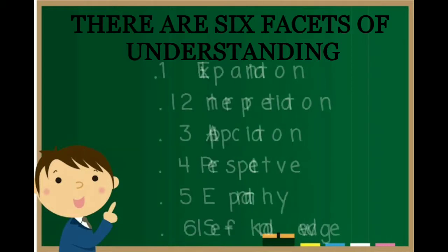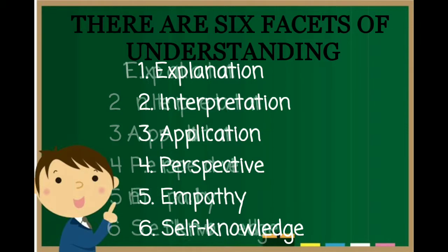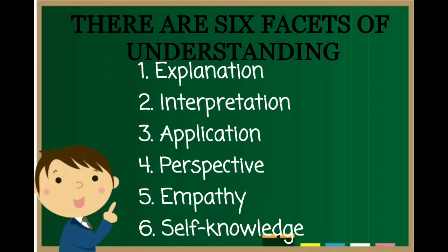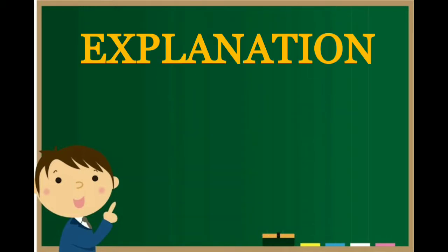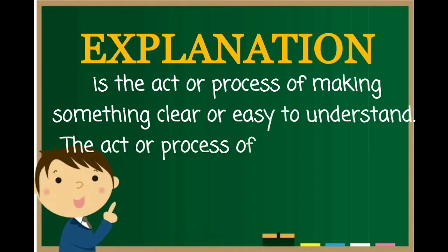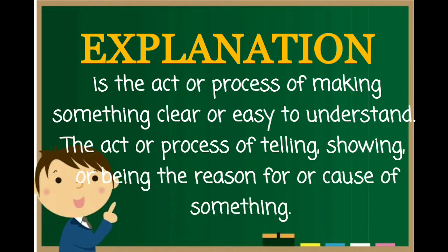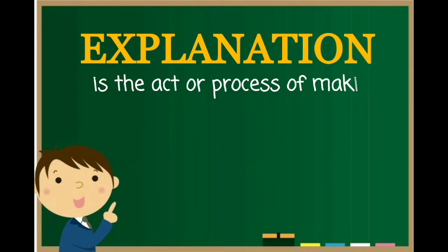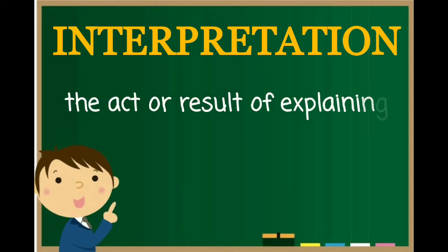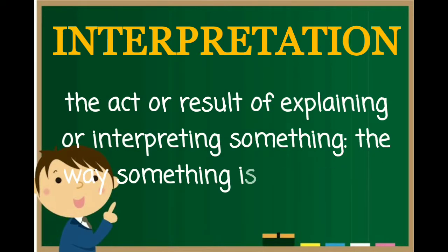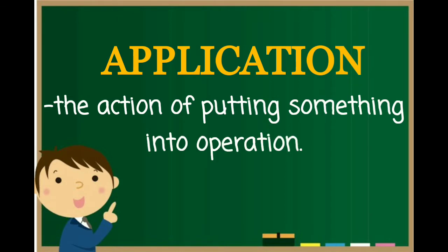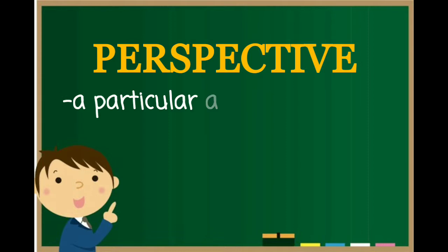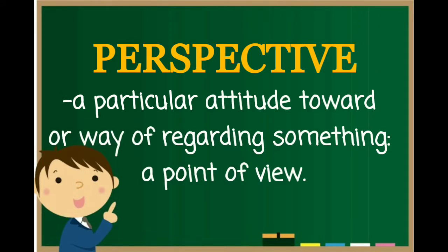There are six facets of understanding: explanation, interpretation, application, perspective, empathy, and self-knowledge. Explanation is the act or process of making something clear or easy to understand — also the act of telling, showing, or being the reason for something. Interpretation is the act or result of explaining or interpreting something. Application is the action of putting something into operation. Perspective is a particular attitude toward or way of regarding something — a point of view.